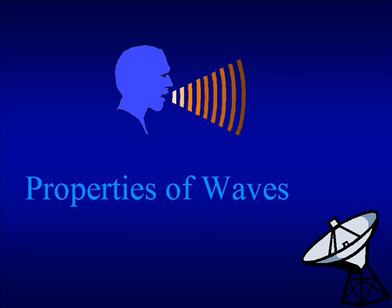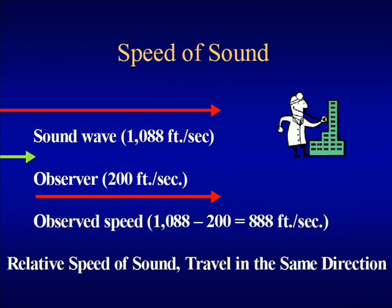We will start by looking at sound waves. We know from Sir Isaac Newton and from subsequent experiments that have proved him to be correct that if a sound wave is traveling at its known speed of 1,088 feet per second and we as an observer are traveling in the same direction as the sound wave at a much lesser speed of 200 feet per second